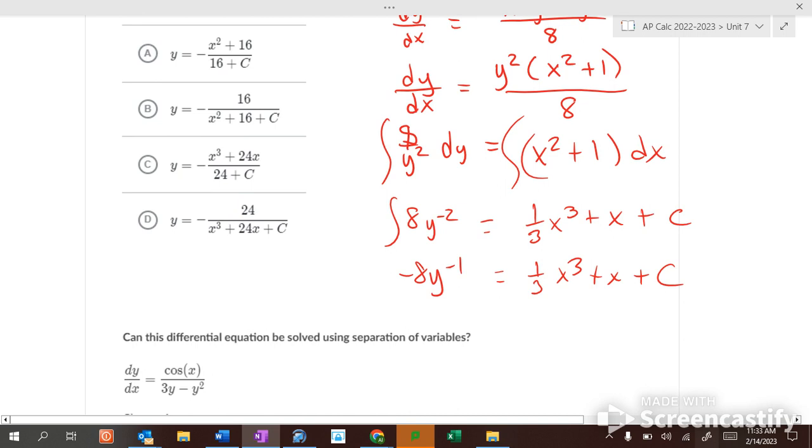Now what? Well, we could divide everything by 8. So y to the negative first equals 1 24th x cubed plus negative 1 8th x plus c. Because 1 8th of c is c. How do I make y to the negative first into y?